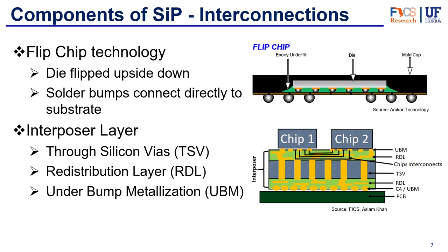Both of these technologies really help shorten interconnections and add more density of interconnections than previous technologies, helping with performance, increasing bandwidth, reducing latency, and overall increasing performance. Some other technologies, like bridge technologies similar to Intel's EMIB, have been tested and could potentially increase the power of SIPs in the future. As of now, the interposer seems to be the way to go, and bridges would come along as the race between Intel and TSMC for transistor size nears its limit. So now the focus is on better interconnections and higher density, where bridges could potentially come in and take SIPs to a new level.